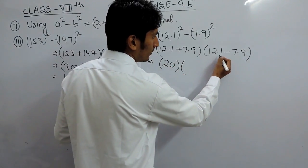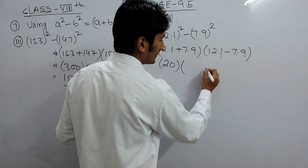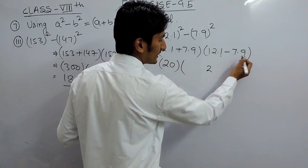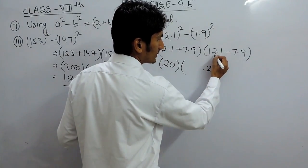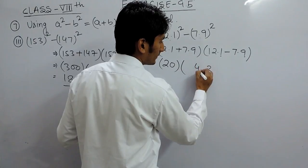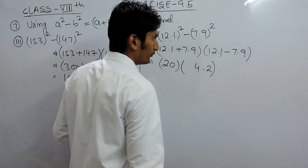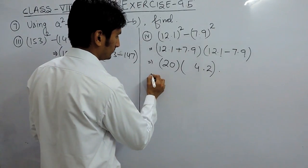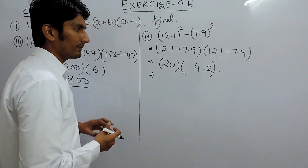Multiplied with... Now, 11 minus 9 is 2. So this will become 4.2. Now we have to multiply this.